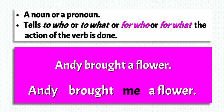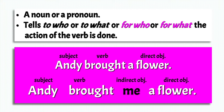Andy brought a flower — we know that flower is the direct object. But if I said Andy brought me a flower, then me is your indirect object. It would be the same as saying Andy brought a flower to me. So to me would be your indirect object, and the flower, of course, is the direct object.